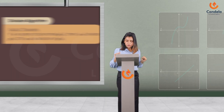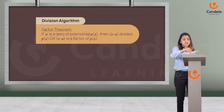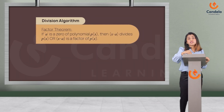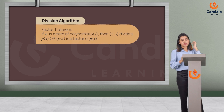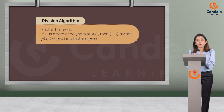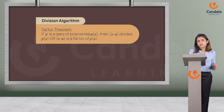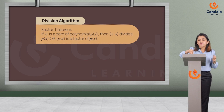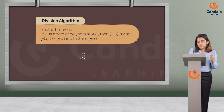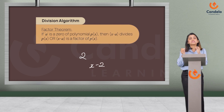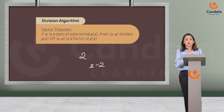Now we are going to enter into the topic of division algorithm. First we'll be learning the factor theorem: if a is a zero of the polynomial p(x), then (x − a) divides p(x), or (x − a) is a factor of p(x). For example, if 2 is a zero of a polynomial, then (x − 2) is a factor which divides this polynomial.